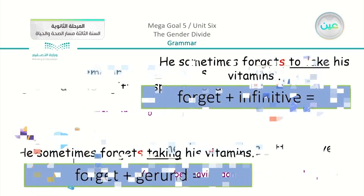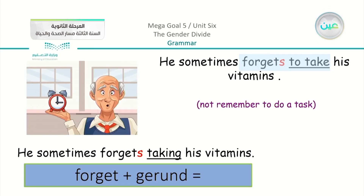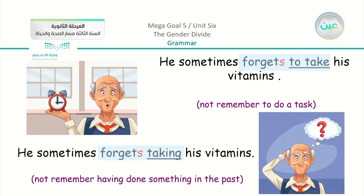For 'forget': 'He sometimes forgets to take his vitamins' — infinitive — means he did not remember to do the task. 'He sometimes forgets taking his vitamins' — gerund — means he doesn't remember whether he did or did not take the vitamins. So in the first he definitely forgot, while in the second he is uncertain about whether the action was done.